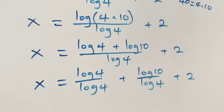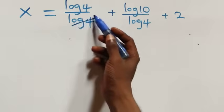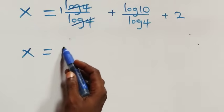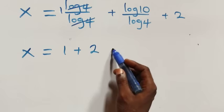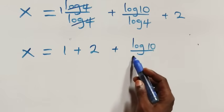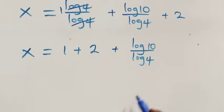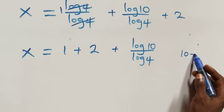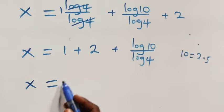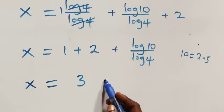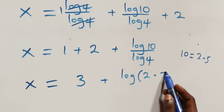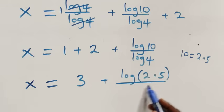Log 4 cancels each other, we have 1 left, which implies x equals 1 plus — writing 2 first — 2 plus log 10 over log 4. Here also, we can express 10 as 2 times 5. So we have x now equals 1 plus 2, that's 3, plus log of 2 times 5 over log 4.